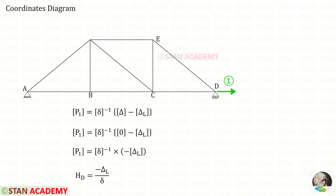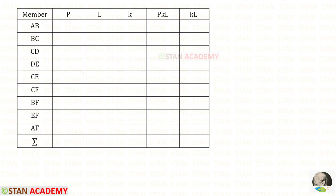We know that in all of these 3 matrices there is only 1 member. In this case, we can take the members out of the matrices. P1 is HD. Delta inverse will be 1 upon delta. So we have simplified the formula to find HD. We have to make a table. In the table, first we need to enter all of the members. P is the member forces in the released structure.